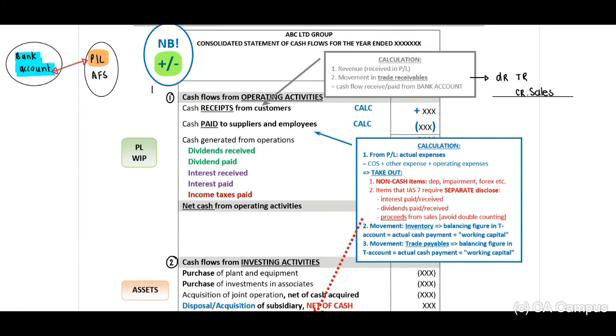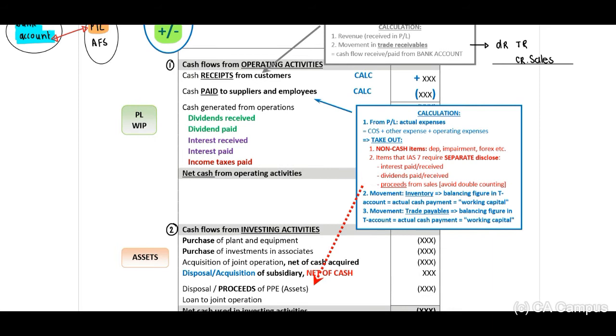When you look at your cash flow statement template, IAS 7 indicates to us that we divide this into three categories. Category number one will be your cash flows from your operating activities which will consist of the operating activities of the entity. Therefore you will get these amounts from your profit and loss and from your WIP. The WIP will be your trade receivables, your trade payables and your inventory.